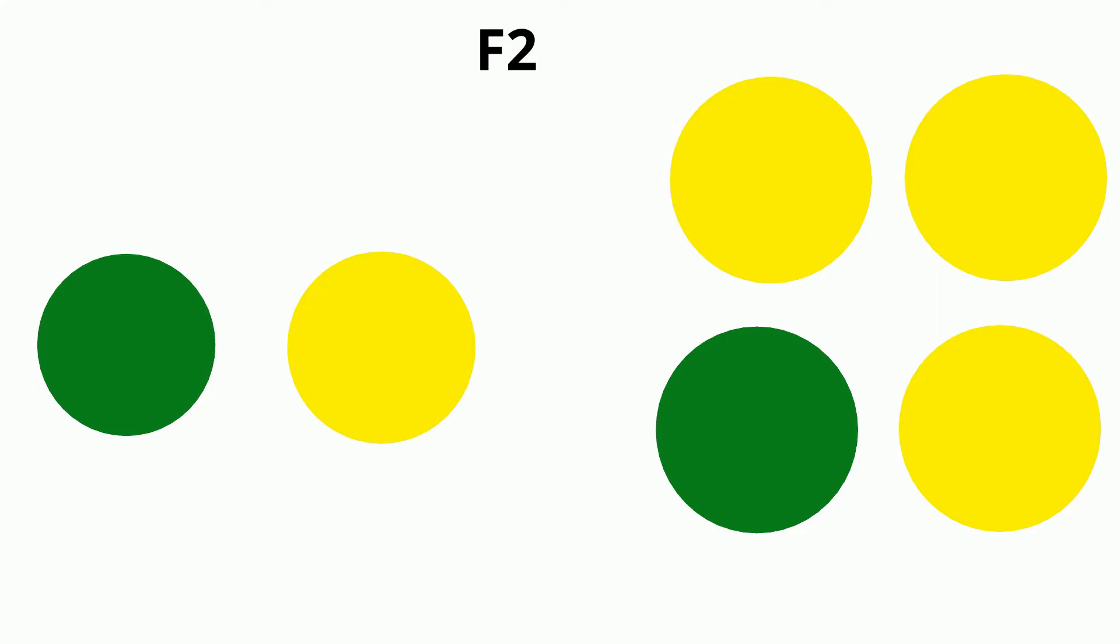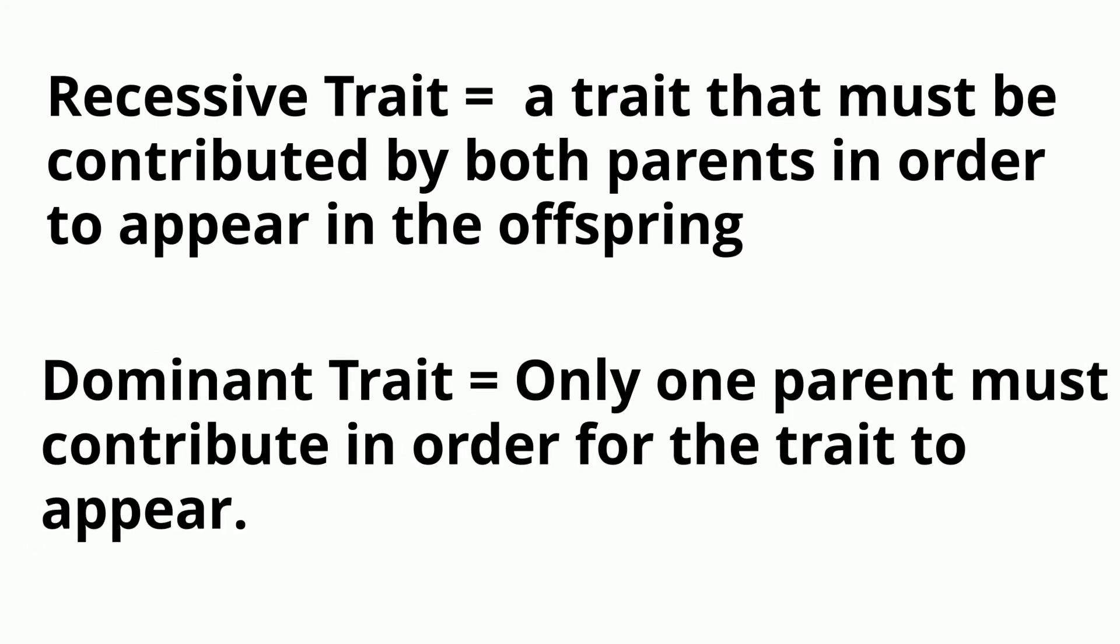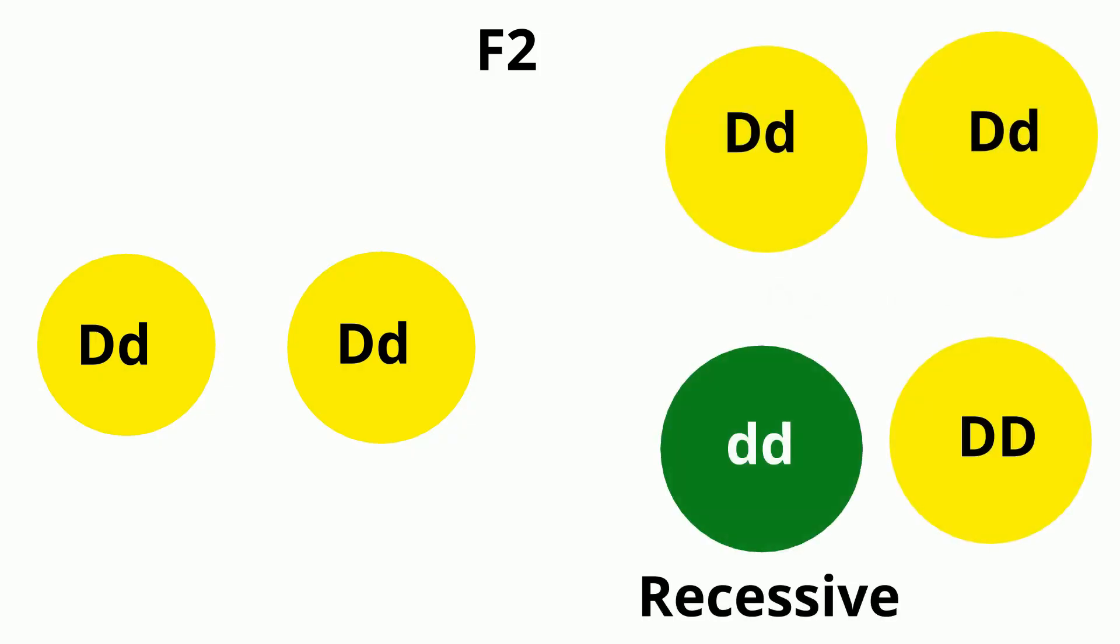To explain this phenomenon, Mendel coined the terms recessive and dominant to describe certain traits. The green trait, which seems to have vanished in the first generation, is recessive, and the yellow is dominant.